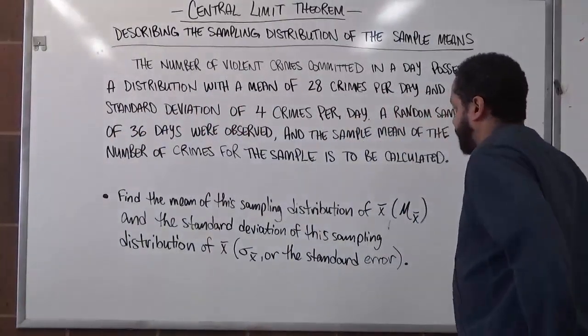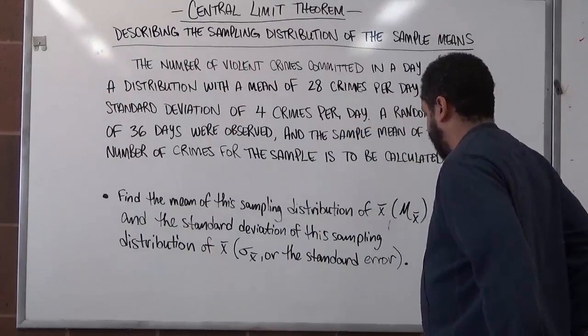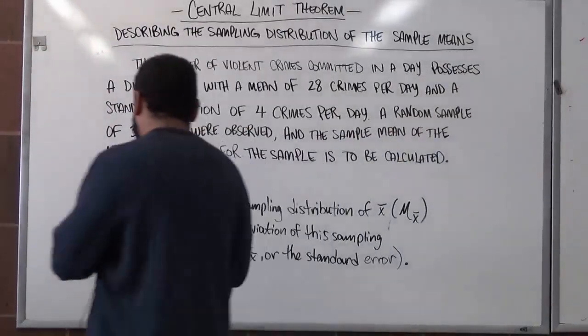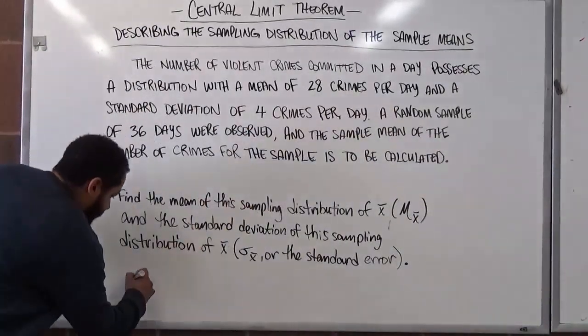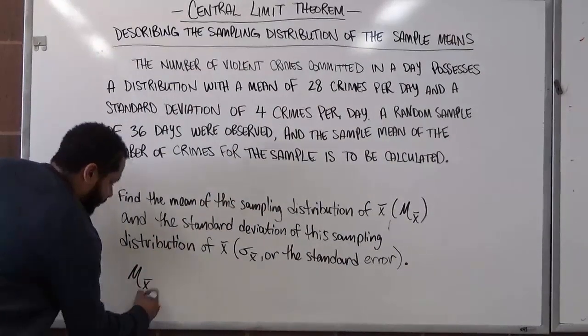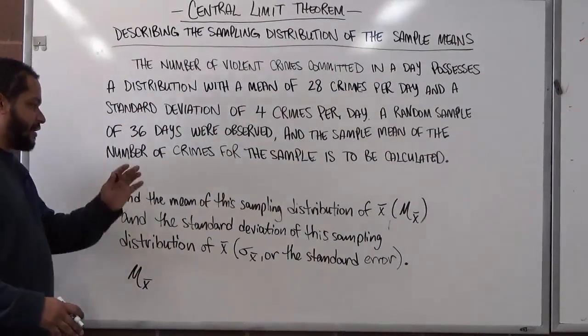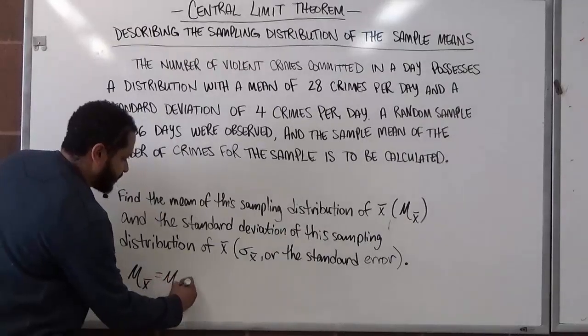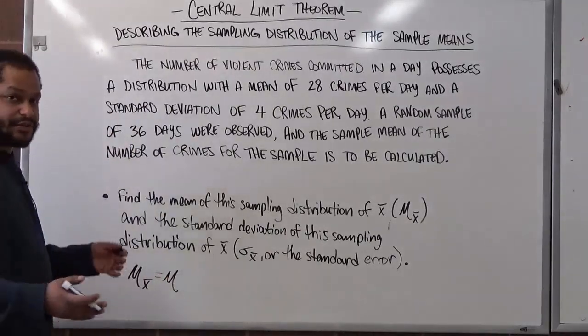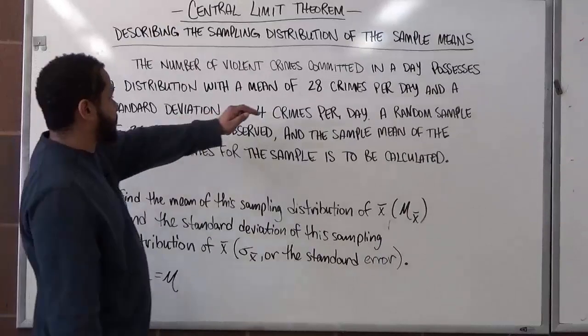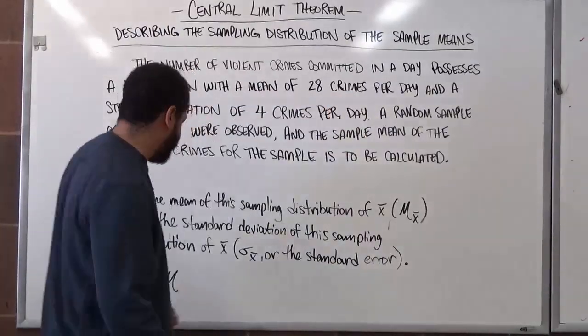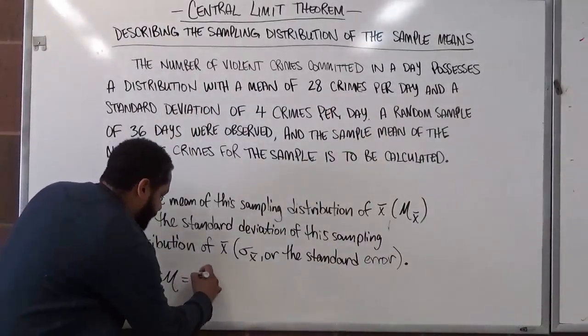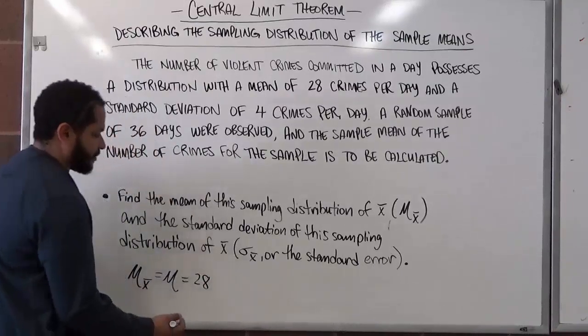So let's begin with the mean of the sampling distribution of x bar. So now when we're calculating the mean of x bar, we have to remember that the mean of the subscript x bar is always going to be equivalent to the actual mean. This doesn't actually change at all. So what we're going to do is we're going to look up the mean and we see the mean is 28 crimes per day. So here we're going to have the same value with 28 crimes per day.